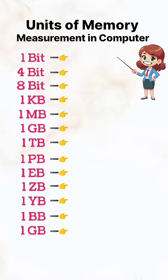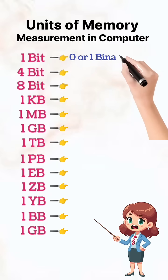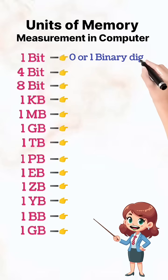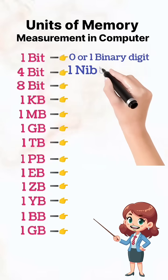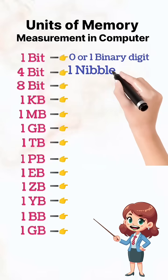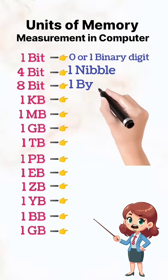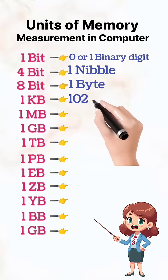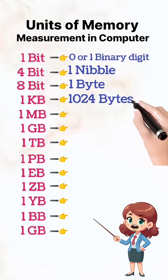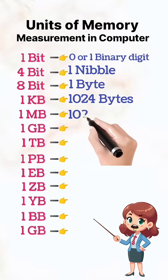Units of memory measurement in computers: 1 bit is equal to 0 or 1 binary digit. 4 bits is equal to 1 nibble. 8 bits is equal to 1 byte. 1 kilobyte is equal to 1024 bytes. 1 megabyte is equal to 1024 kilobytes.